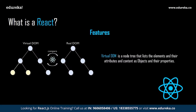The Virtual DOM is a node tree that lists elements, attributes, and content as objects and their properties. React's render function creates a node tree from React components, then updates it in response to mutations in the data model. Virtual DOM works in three steps: whenever underlying data changes, the entire UI is re-rendered in the virtual DOM; the difference between the old and new representation is calculated; and finally, the real DOM is updated only with what has actually changed, making the application faster with no memory wastage.